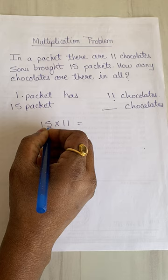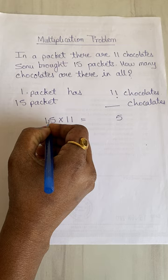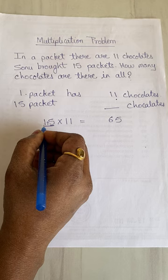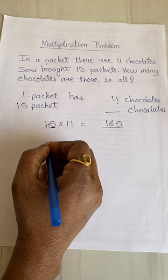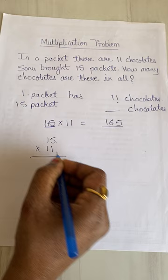So for 15 into 11, we write the 5 as it is, then add the two digits of 15: 1 plus 5 is 6, and we write the 1 as it is. So the answer is 165 chocolates.